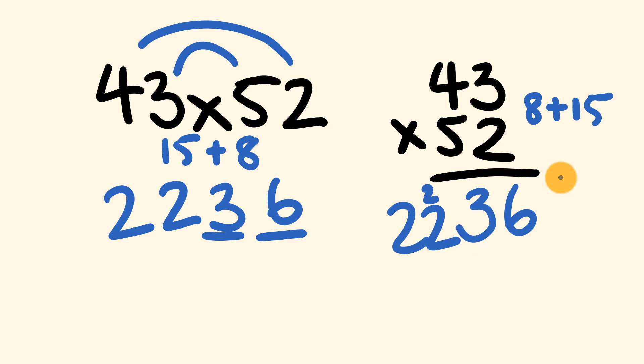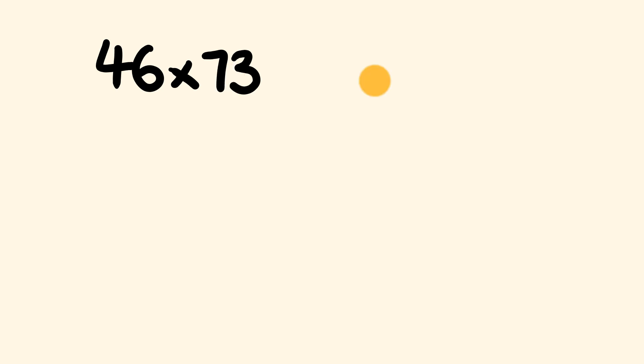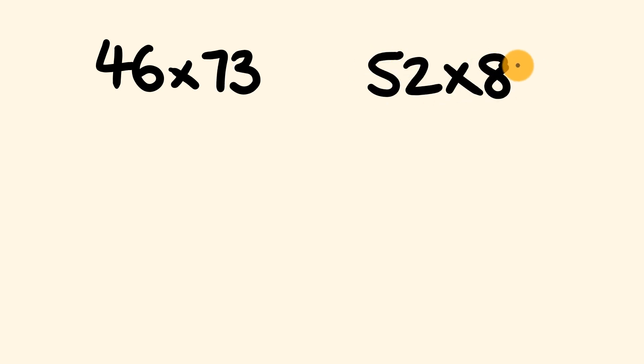I personally think the cross multiplication is a little bit less messy — but let me know if you agree or disagree. Now here are a couple for you to try: 46 multiplied by 73, and 52 multiplied by 87. Pause the video, give these a go using both methods, then come back and we'll look at the answers.